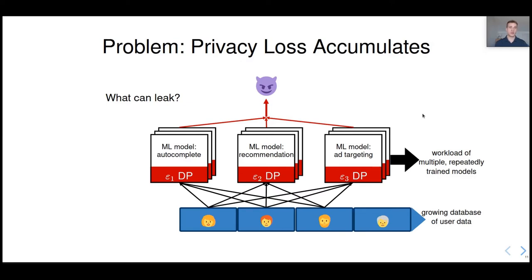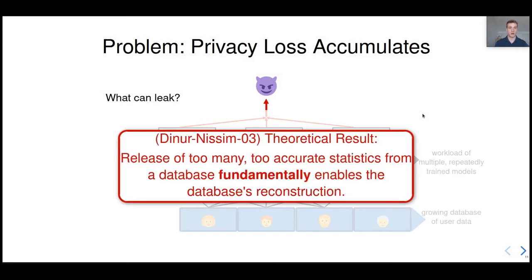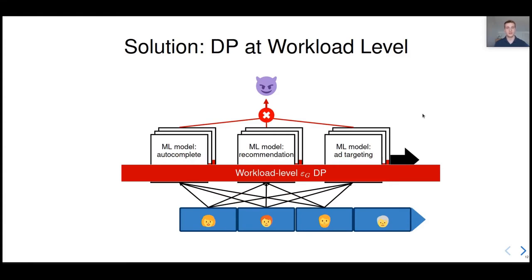The issue is that most DP algorithms focus on individual models and static databases. But in practice, ML systems run workloads. It means that we accumulate more sensitive data over time, as users join the system and generate more data. We also want to train new models on the same data. Or we might want to retrain all models over and over again with new data. So what can leak in this case? Well, actually, if we release too many models, we can basically allow an adversary to reconstruct the whole database. The solution to avoid that is to use differential privacy at a workload level, to give global privacy guarantees, even for users who will join the system later.